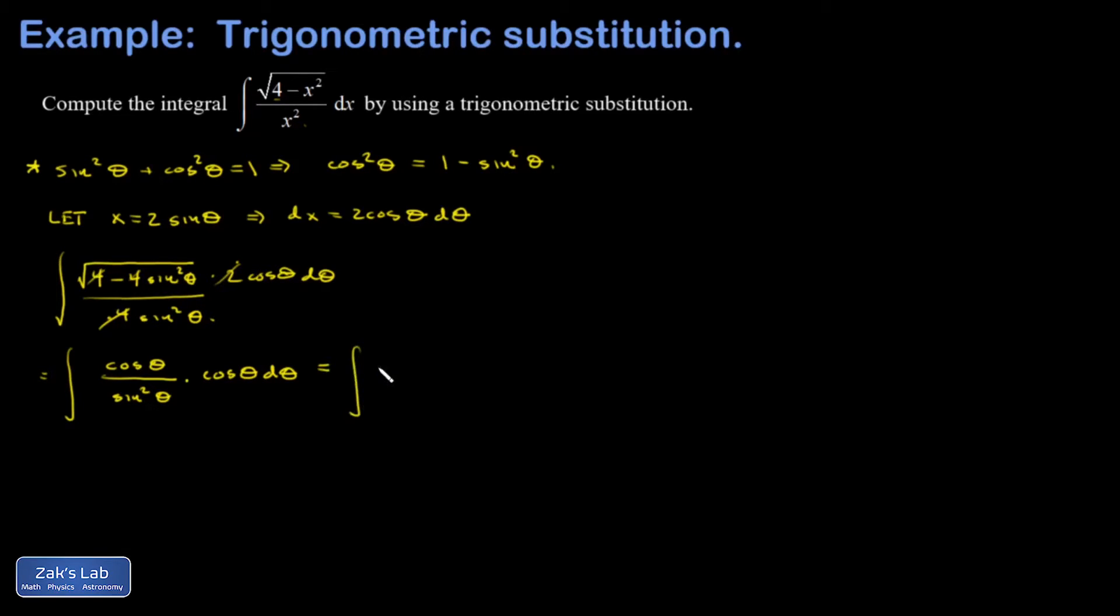My integral is now the integral of cosine squared theta over sine squared theta d theta. So now we're stuck with a trigonometric integral that has its own challenges. And the first thing that occurs to me here is let's go ahead and write the cosine squared in terms of the sine function.